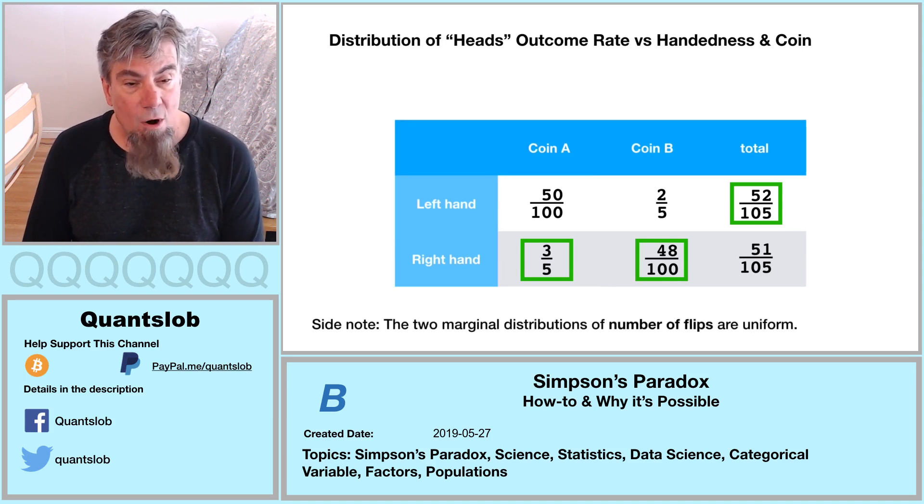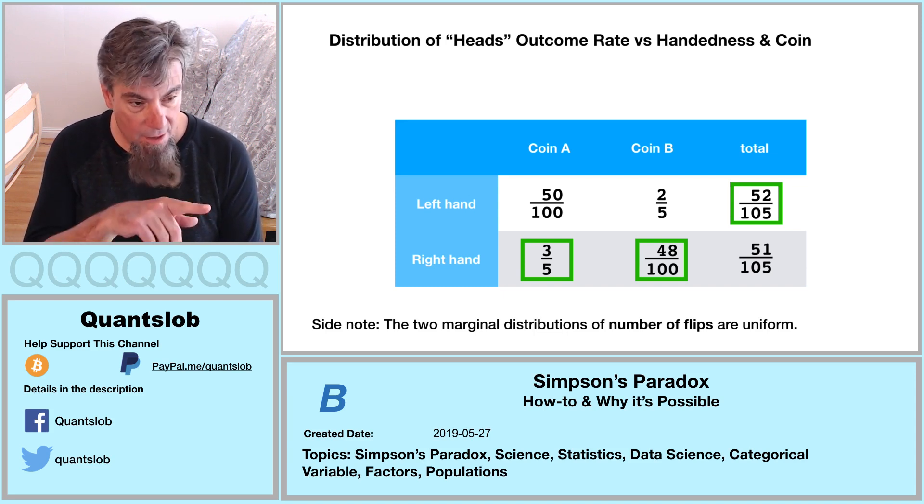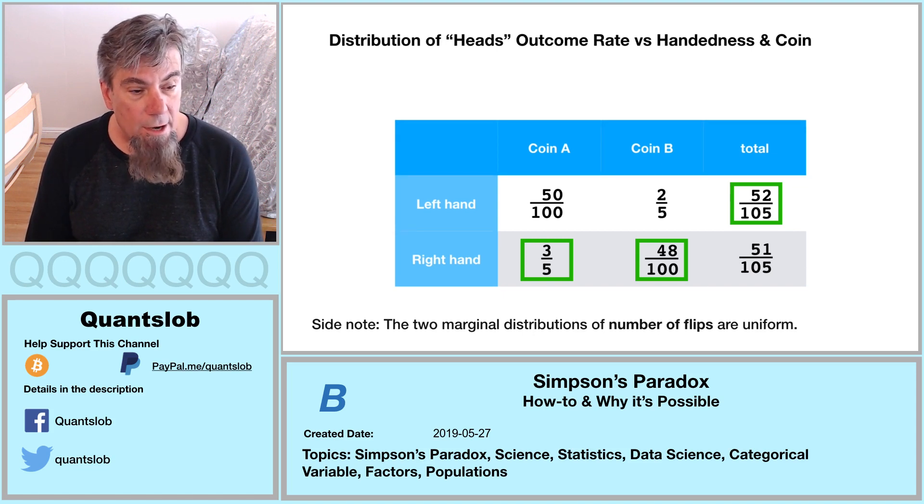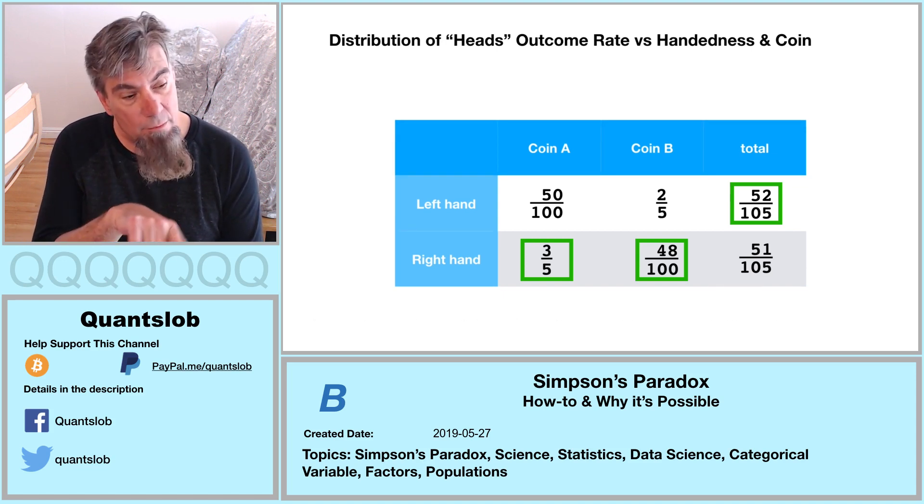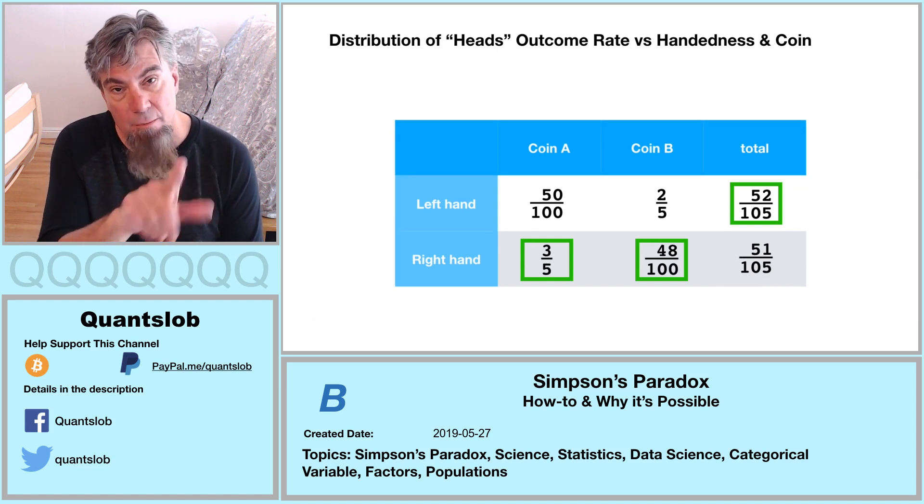I want to point out an interesting property of this particular simulation. Notice that the two marginal distributions are uniform. The number of left hand flips is the same as right hand flips, 105. We can see that here. The number of flips of coin A is the same as coin B. It's not shown, but they're both 105 if you just sum up the numbers in the columns.